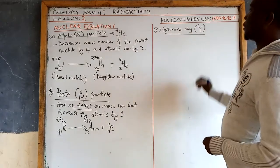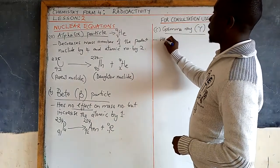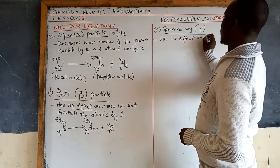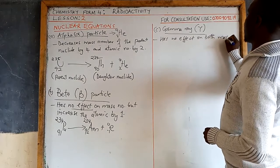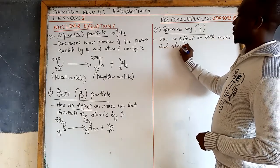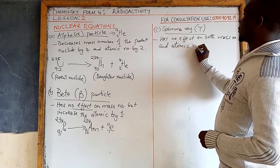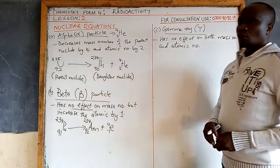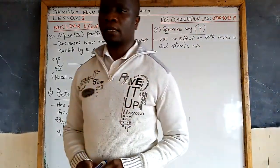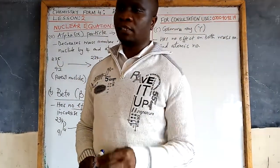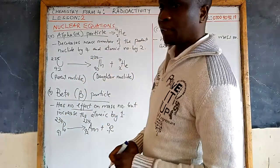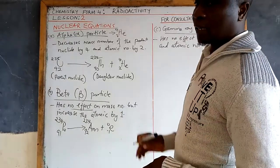Now for gamma radiation in nuclear equations: when gamma is emitted, it has no effect on either the mass number or the atomic number.